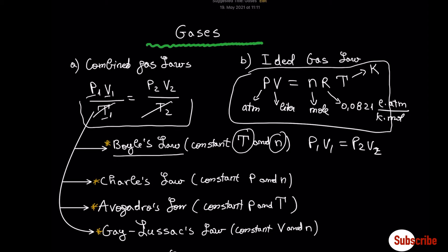We can also derive Charles' law, which operates at constant pressure. We can simplify the pressure from the combined gas law and we get V1/T1 = V2/T2.